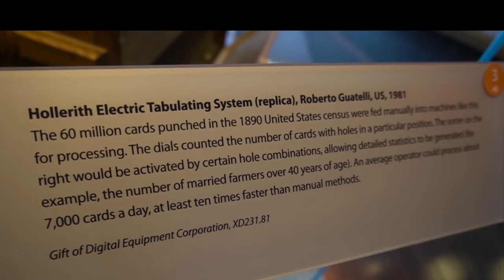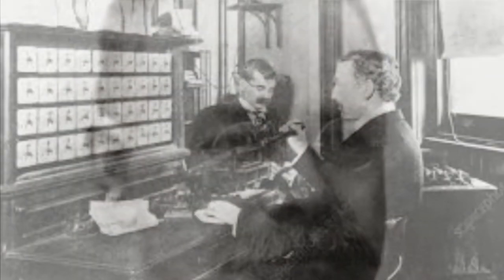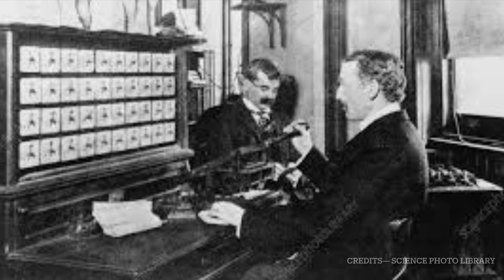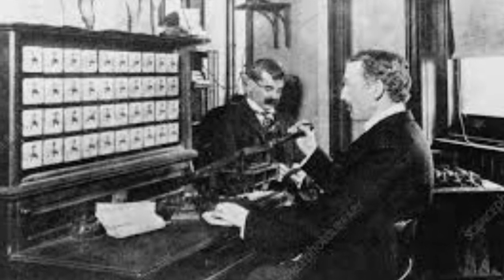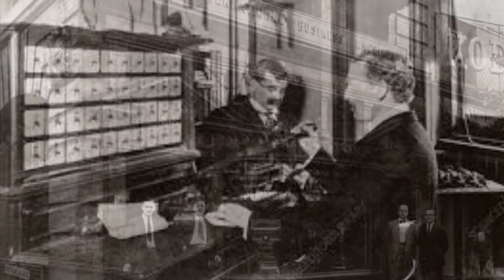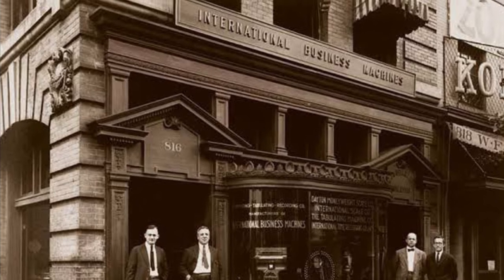The 60 million cards punched in the 1890 US census were fed manually into machines like this for processing. The dials counted the number of cards with holes in a particular position. The sorter would be activated by certain hole combinations, allowing detailed statistics to be generated — like the number of married farmers over 40 years of age. An average operator could process about 7,000 cards a day, at least 10 times faster than manual methods. Hollerith then went on to start his own business specialising in punched card data processing equipment. His firm merged with several others in 1911 to become the Computing Tabulating Recording Company, which a few years later was renamed to International Business Machines, or IBM for short.